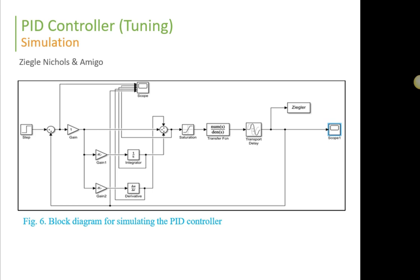And then, this is the simulation part where we get the value of the tuning, of this PID, the value of KP, KI and KD, which are using two tuning methods, Ziegler-Nichols and Amigo.